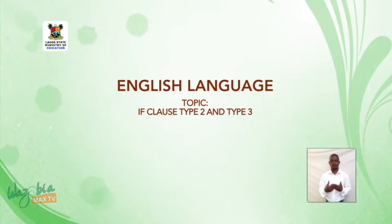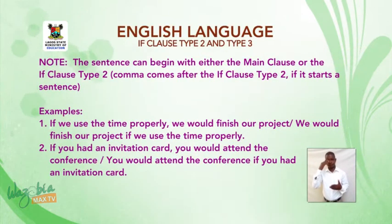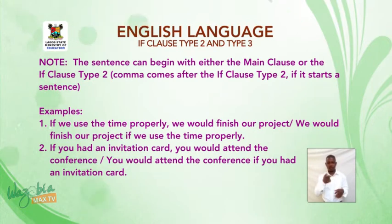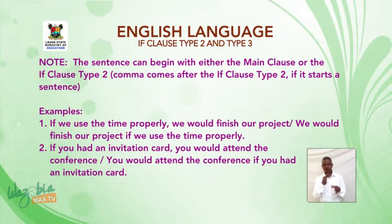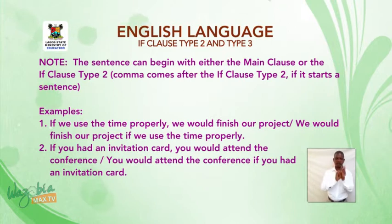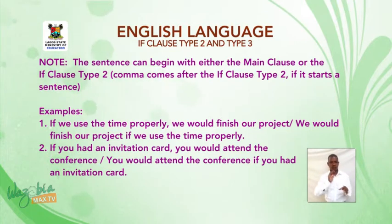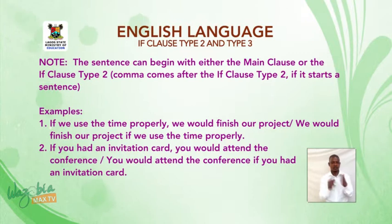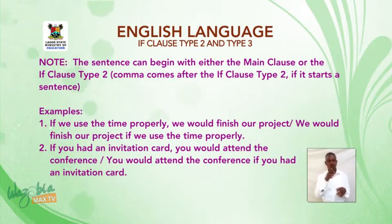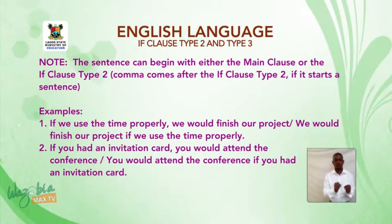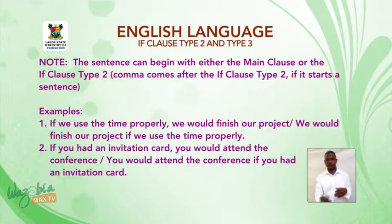Welcome back. Note: The sentence can begin with either the main clause or the if clause type 2. A comma comes after the if clause type 2 if it starts a sentence. Examples: One, if we use the time properly, we would finish our project. We would finish our project if we use the time properly. Two, if you had an invitation card, you would attend the conference. You would attend the conference if you had an invitation card.